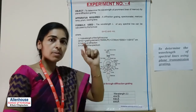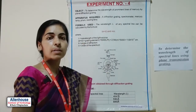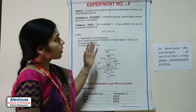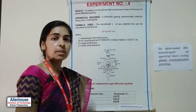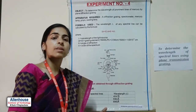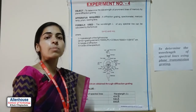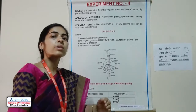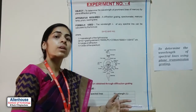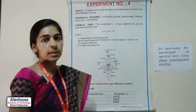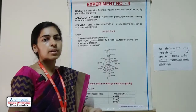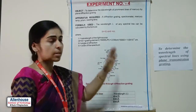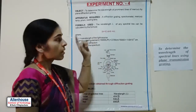The spectrometer is one apparatus that helps us calculate the wavelength. Because mercury is a polychromatic source of light, we will see a large number of colors, and every color has a different wavelength. So we will determine those wavelengths — red, yellow, green — the whole spectrum. We will calculate the wavelength for all colors.